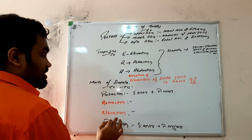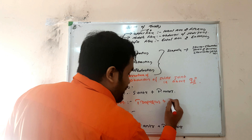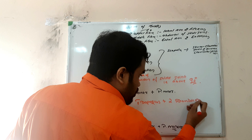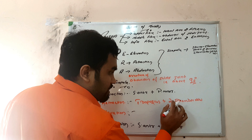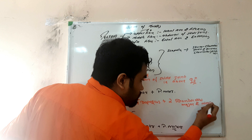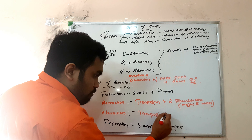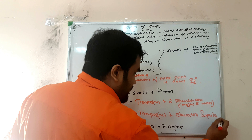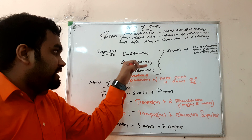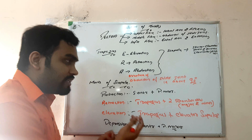Next muscle is trapezius. Trapezius helps in three movements - you can remember the mnemonic IRA: I for elevation, R for retraction, and A for abduction. These three movements are shown by trapezius. Elevation of scapula involves the last three muscles which help in the sternoclavicular joint and acromioclavicular joint.